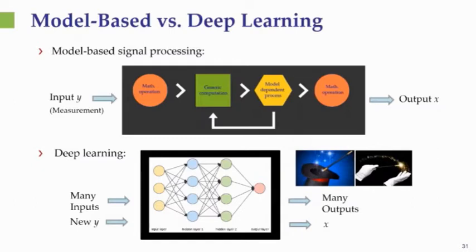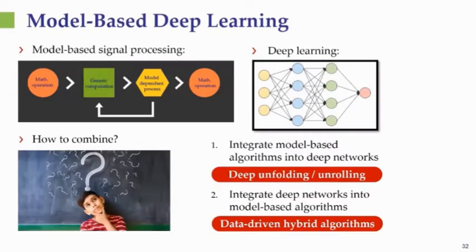The question is how to combine these two approaches. We suggest two different methods. The first is to integrate model-based methods into deep learning by relying on the idea of unfolding, first suggested by Gregor and LeCun. The second approach is the reverse: integrating deep networks into existing model-based algorithms. Nira will take over and show how both of these approaches are actually used in the context of different communication problems.